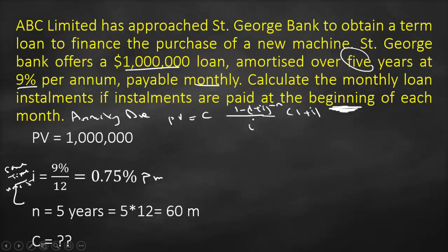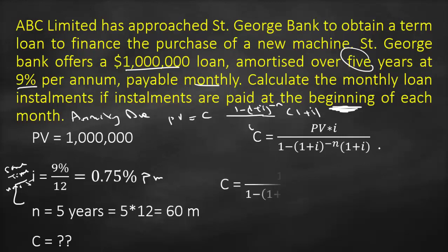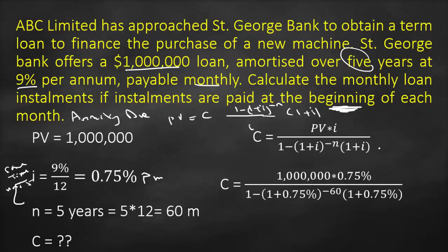Therefore, I need to rearrange this formula to put C on one side. Our formula would be C equals present value multiplied by i, divided by 1 minus (1 plus i) to the power negative n — that's ordinary annuity. Multiplying by 1 plus i makes it annuity due. So we get: 1,000,000 × 0.75% ÷ [1 − (1 + 0.75%)^(−60)] × (1 + 0.75%), giving us monthly installments of $20,603.83.